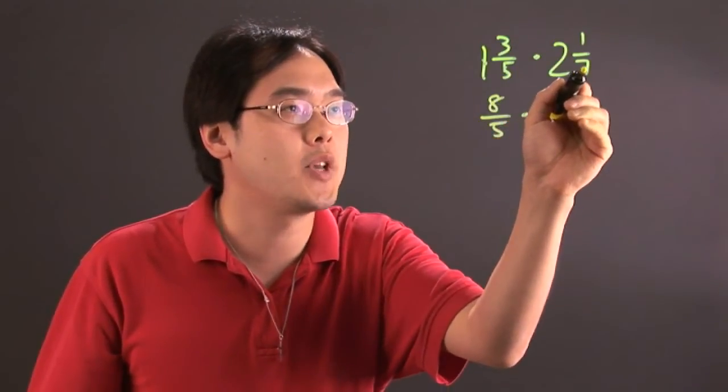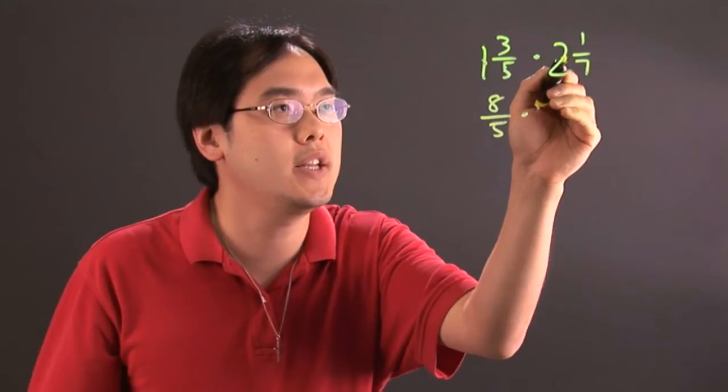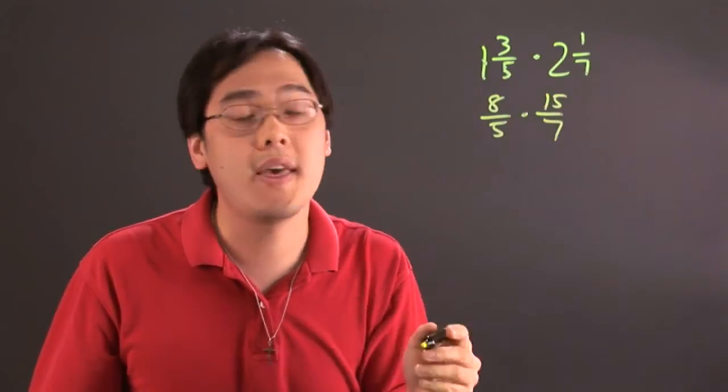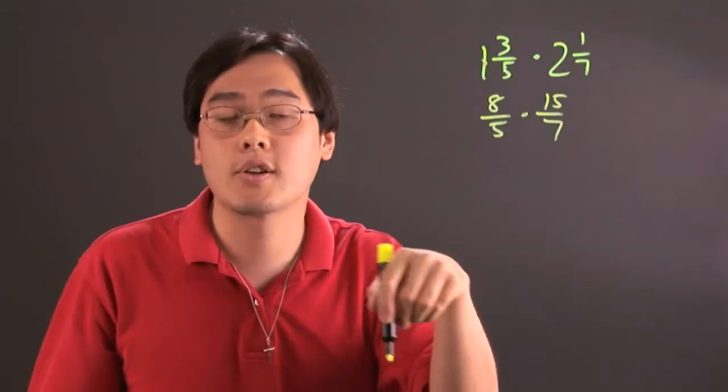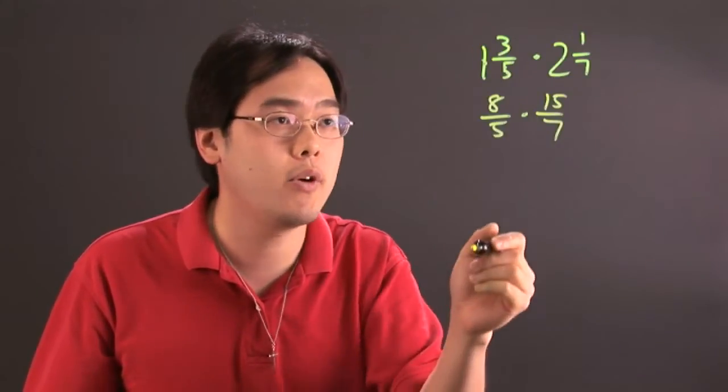And then do the same thing over here. Seven times two is fourteen, plus one is fifteen, over seven, and then you can multiply cross, simplify first, and then multiply and go from there.